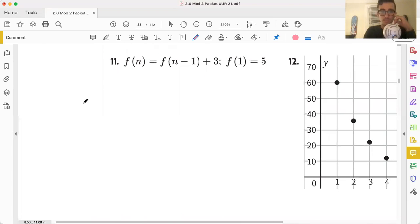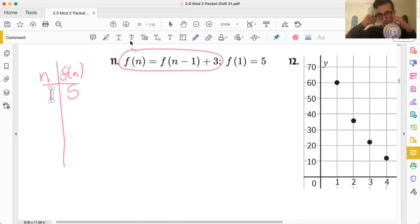What's going on here? We have the first term in our sequence. I'll draw a little table for this. Why not? I'm allowed to. And our table, the first term is five. What's this saying right here? What do you think? Our old buddies, f of n and f of n minus one, what's being said there?